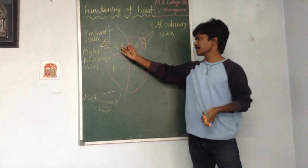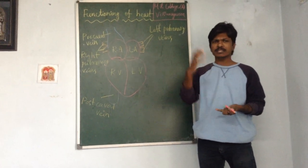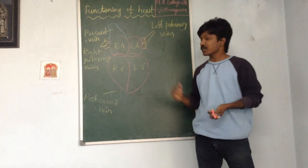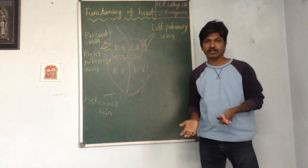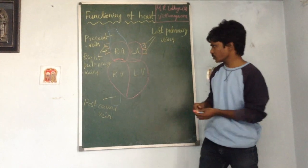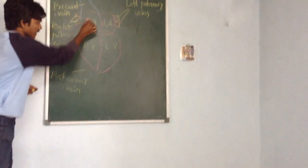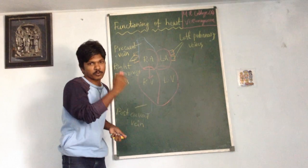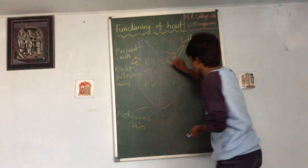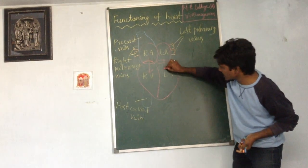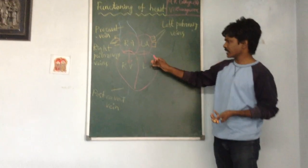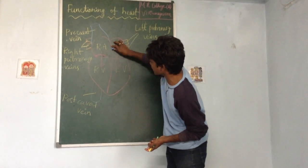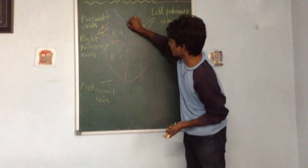So the right atrium has deoxygenated blood and the left atrium has oxygenated blood. They then lead to the ventricles. From the right atrium, the right ventricle receives deoxygenated blood, and from the left atrium, the left ventricle receives oxygenated blood.